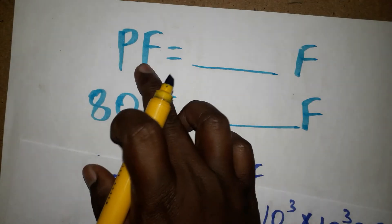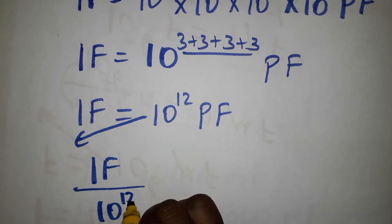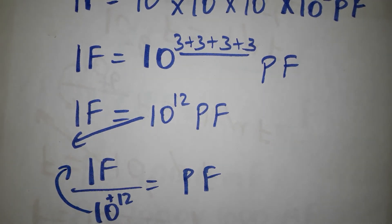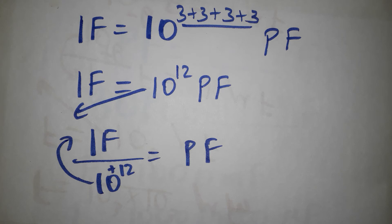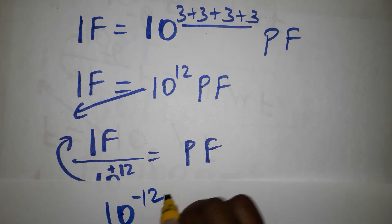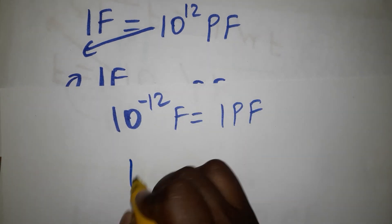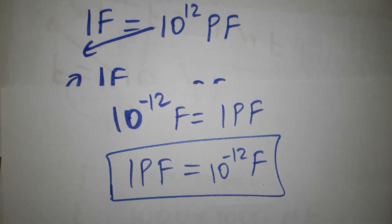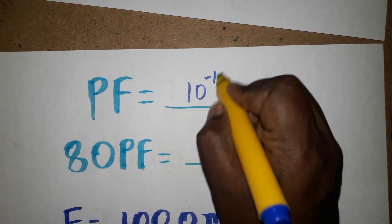Now the question is picofarad to farad. We can directly bring 10^12 to the denominator. So 1 farad equals 10^12 picofarads, which means 1 picofarad equals 1 over 10^12 farads. When taken from denominator to numerator, plus 12 becomes minus 12. So 1 picofarad is equal to 10^-12 farads.